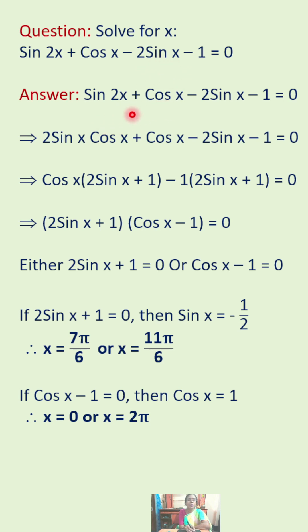First of all, we will be grouping the first two terms and the last two terms together, and we will be taking out the common factor cos x from these two terms to get cos x times 2 sin x plus 1 minus 1 times 2 sin x plus 1 equals 0.